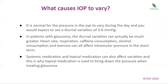It is normal for the pressure in the eye to vary during the day, and you would expect to see a diurnal variation of 3–6 mmHg. In patients with glaucoma, the diurnal variation can actually be much greater. Heart rate, respiration, caffeine consumption, alcohol consumption and exercise can all affect intraocular pressure in the short term. Systemic medication and topical medication can also affect variation, and this is why topical medication is used to bring down the pressure when treating glaucoma.